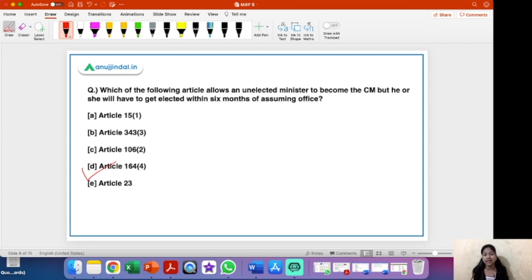So this article allows an unelected person to become the CM of the state provided that he or she will get re-elected through by-polls within the six months of assuming the office. Now what does that mean? If the person is unelected, then how he or she will become the CM? The reason lies in the West Bengal elections. So recently, in the West Bengal elections, Mamata Banerjee has lost the election within her own constituency, that is Nandigram. But still she is going to take oath today, that is on 5th of May.